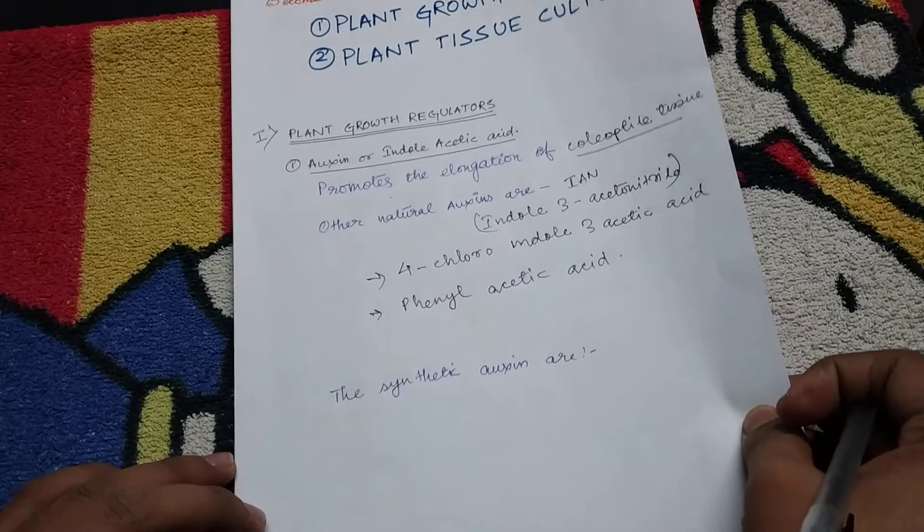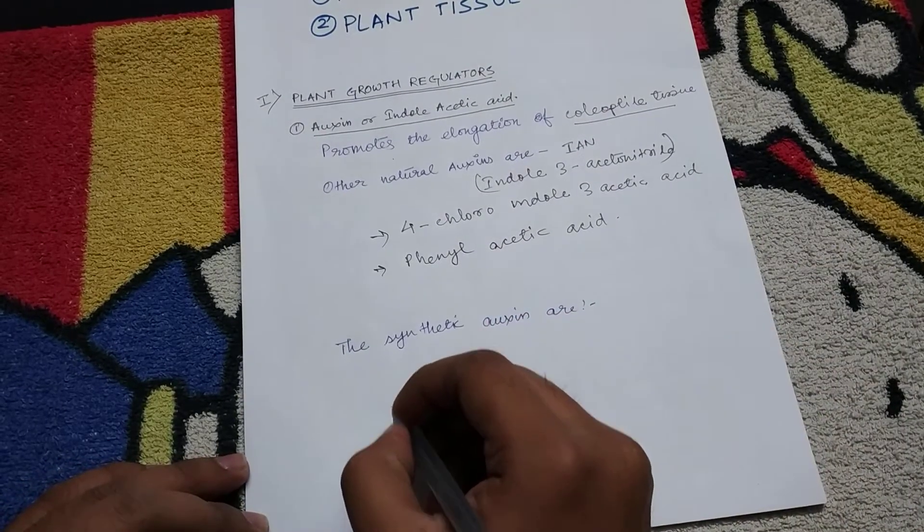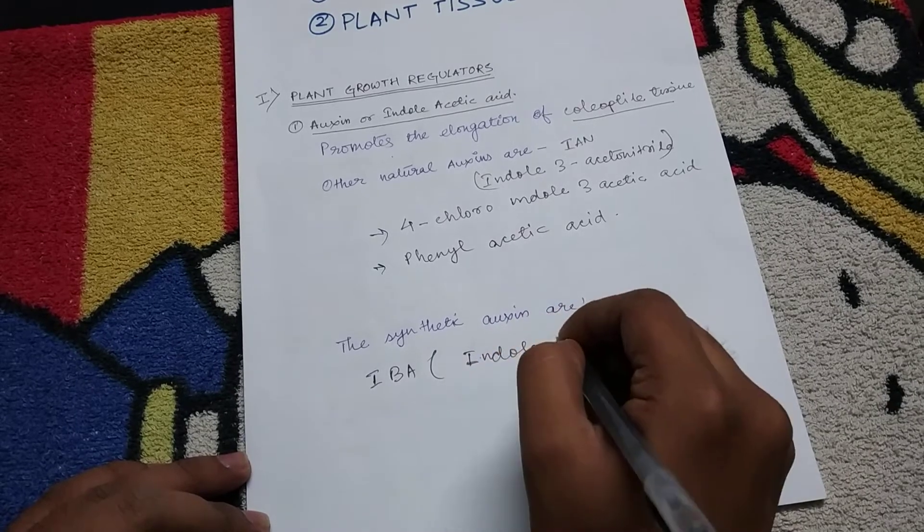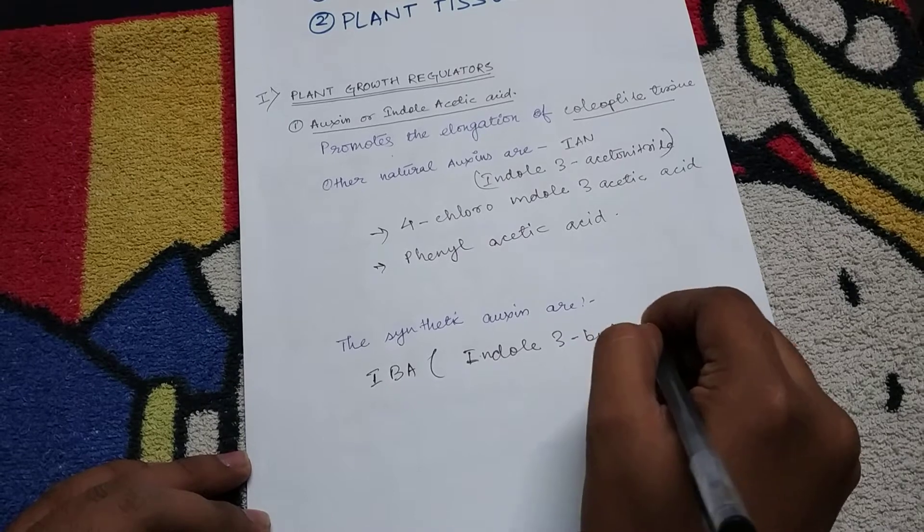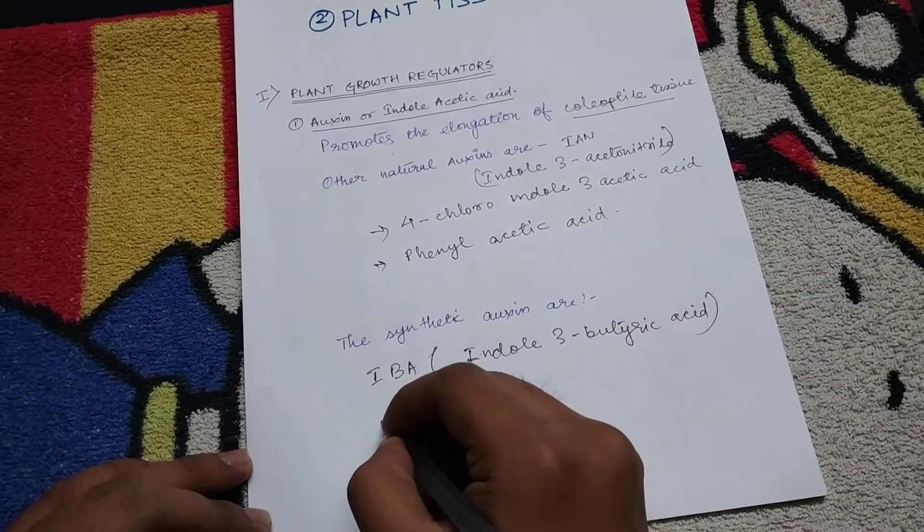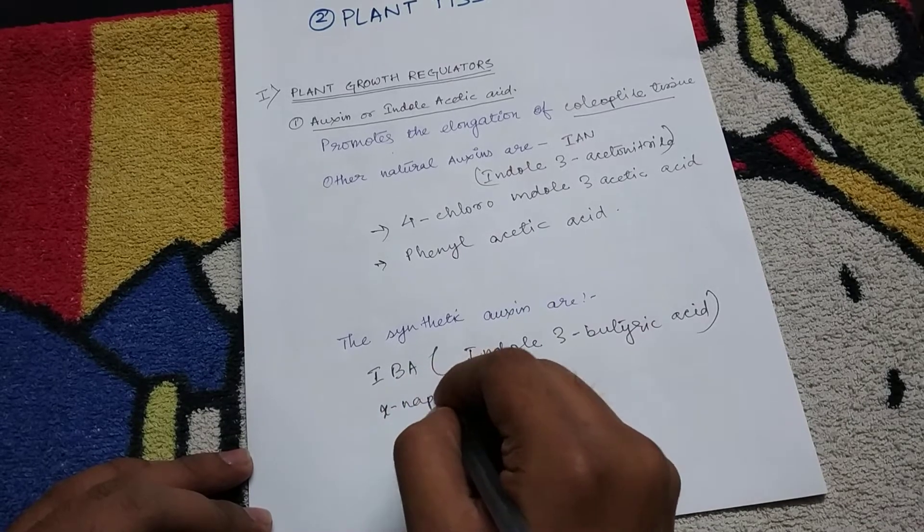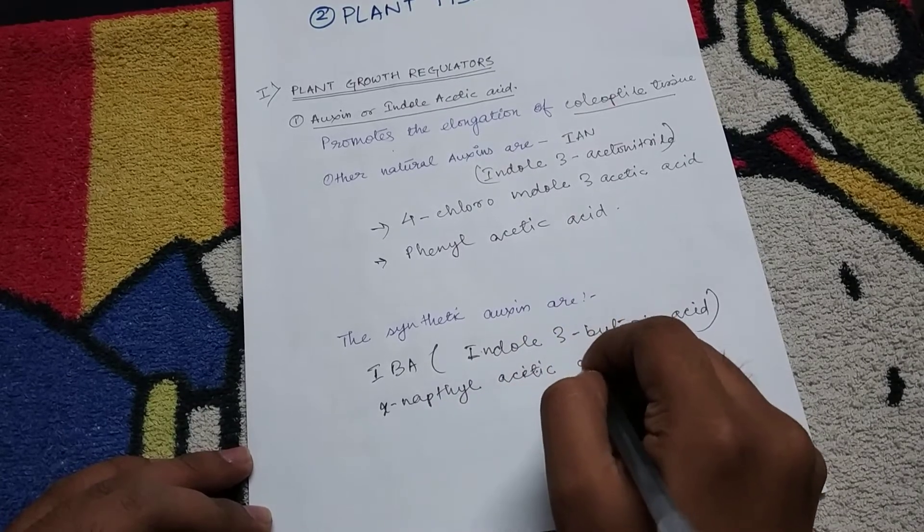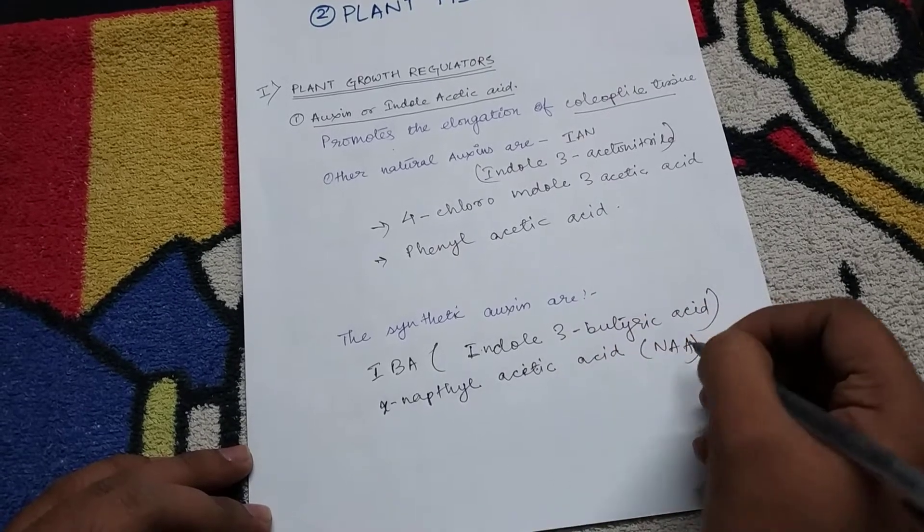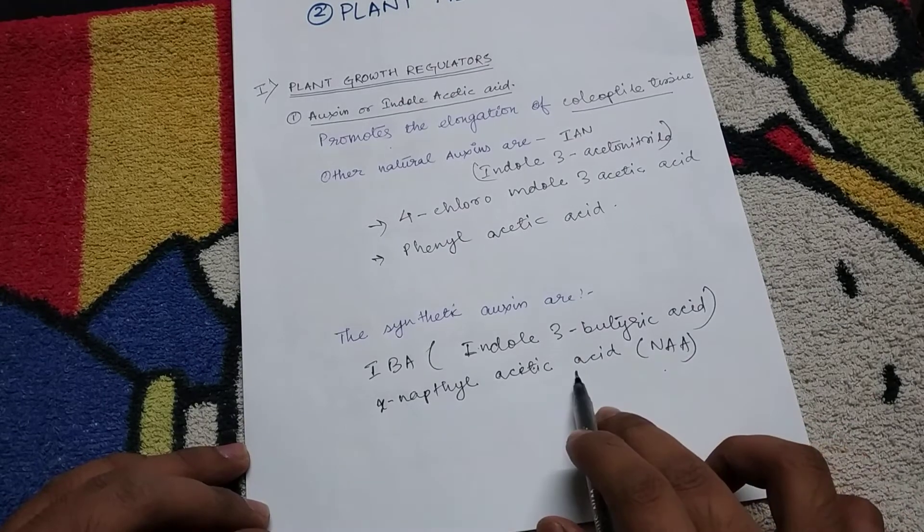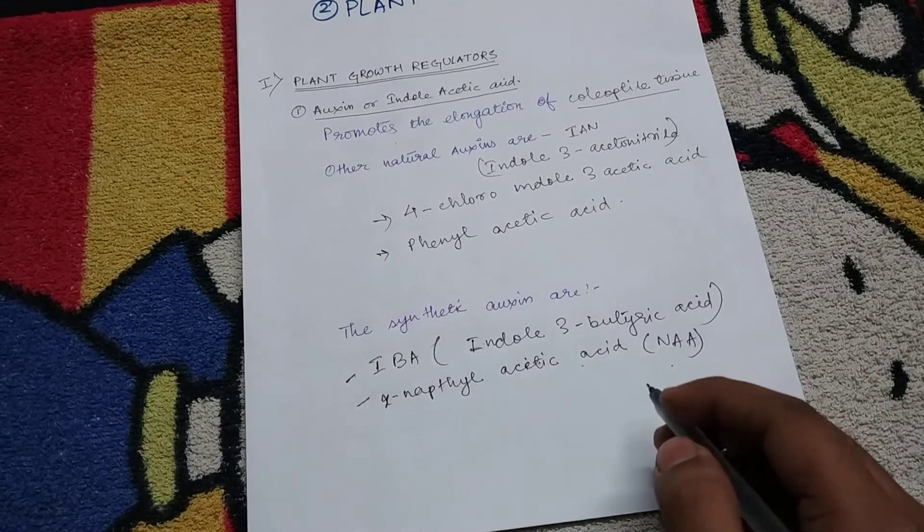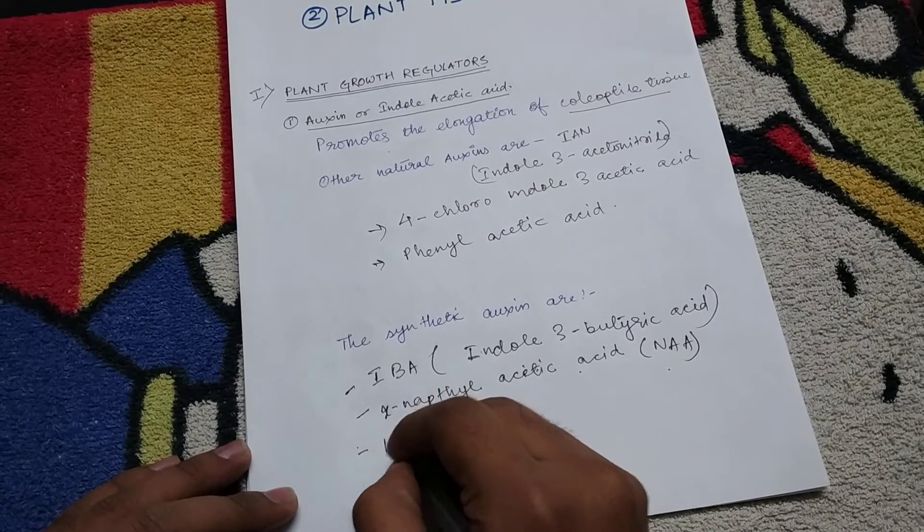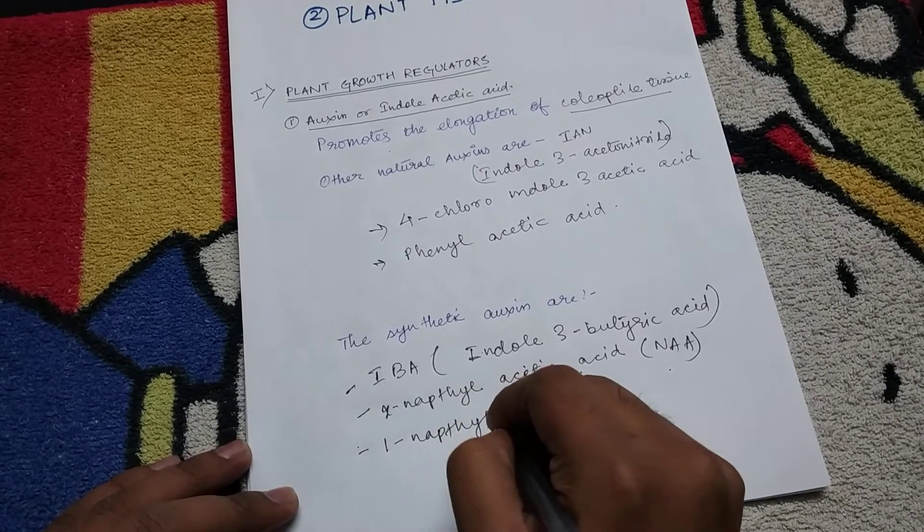Now the synthetic auxins are IBA or indole 3-butyric acid, and alpha-naphthyl acetic acid or NAAA. So in exam the short form may also come, the long form may also come, so you have to remember both. Then there is 1-naphthyl acetic acid.